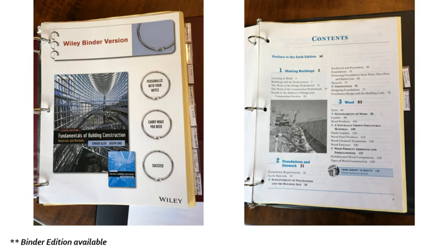The book also comes in a binder edition. I received one as an instructor and find it really handy. On the left you can see my large three- to four-inch binder holding all thousand pages — roughly 500 pages double-sided — and on the right my small one-inch binder where I look at two or three chapters at a time. If you're hauling this book around, the binder format might work well for you too.